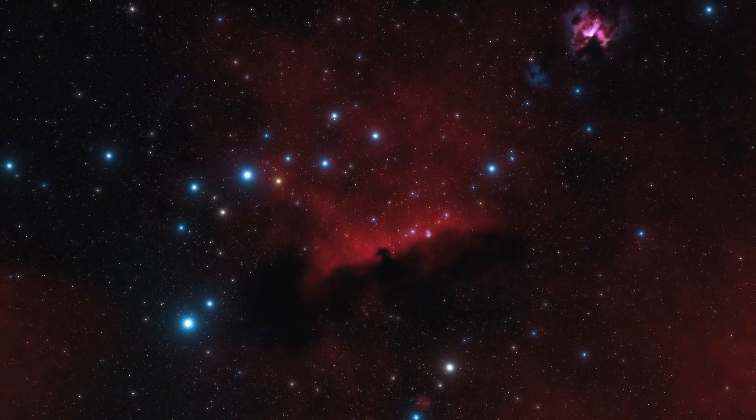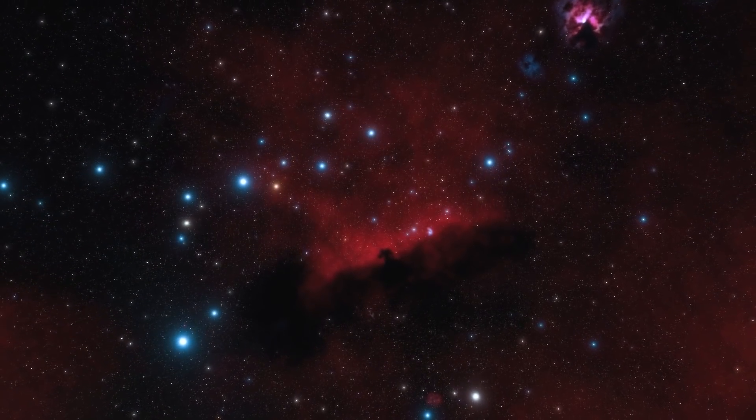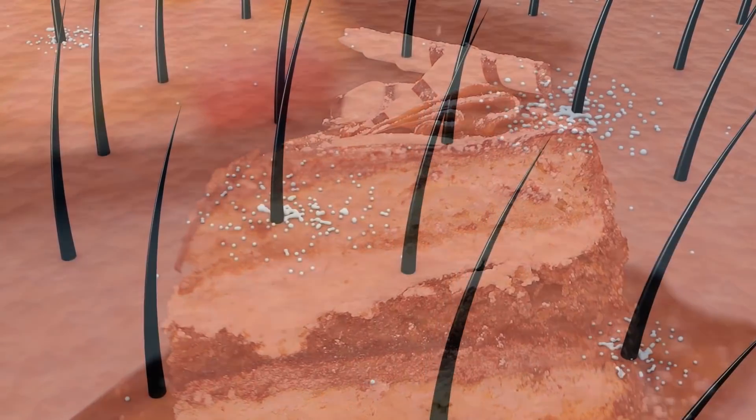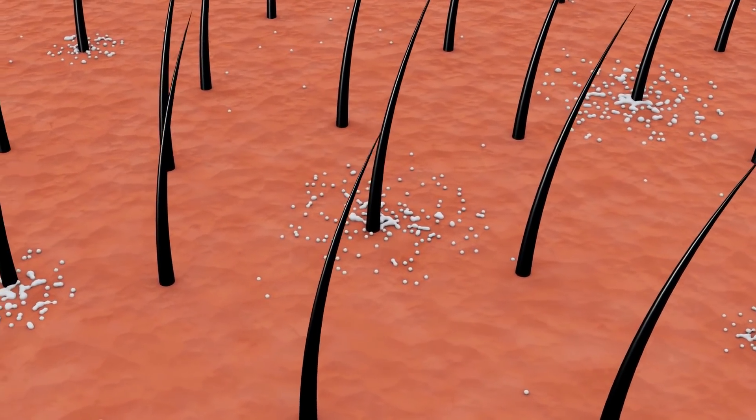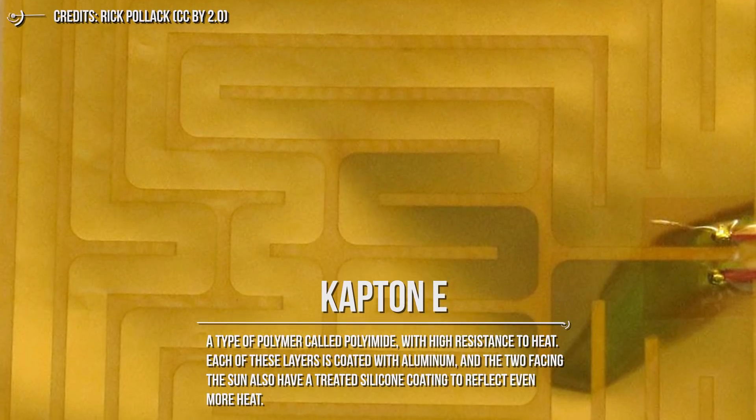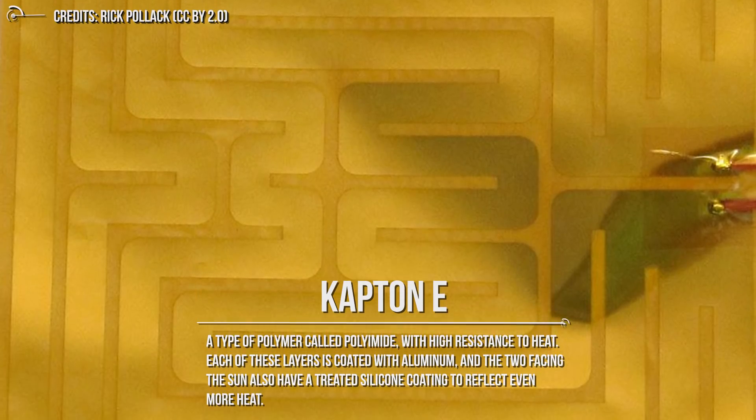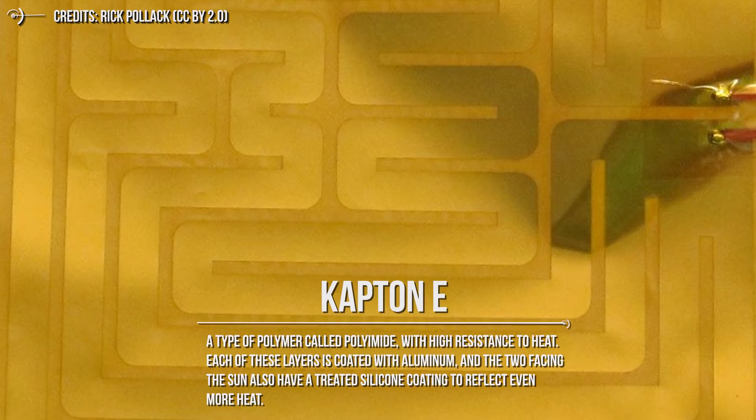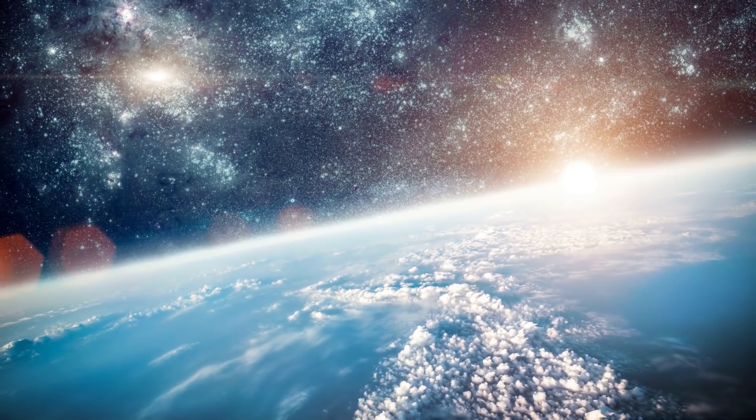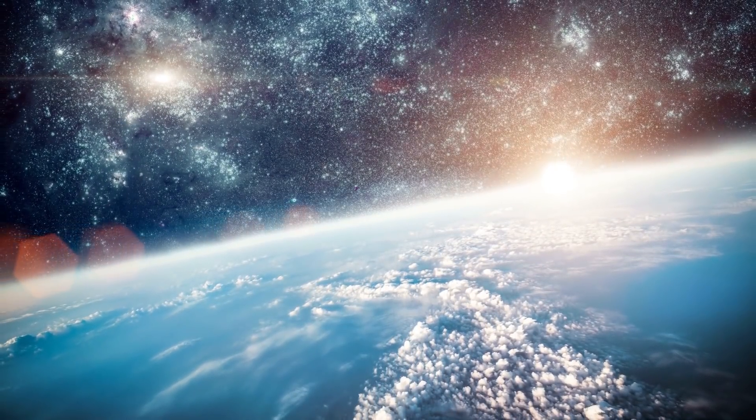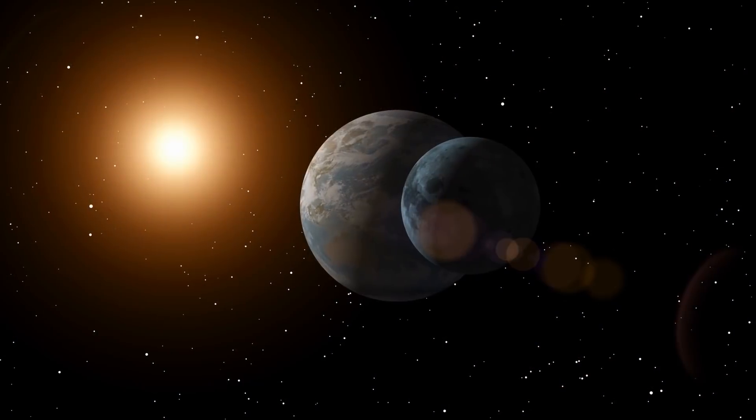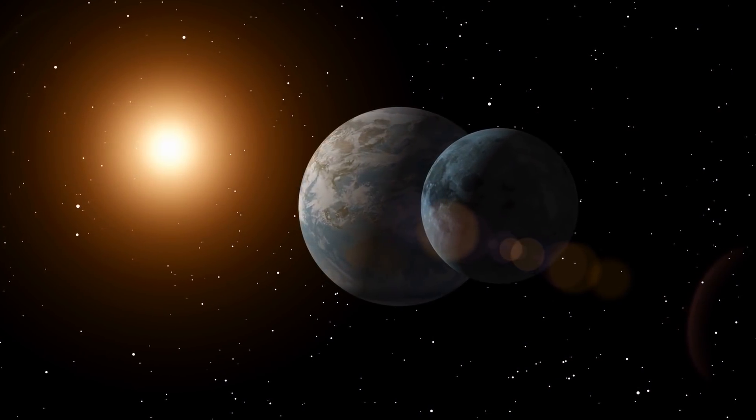Once in space, the telescope will deploy a solar screen as large as a tennis court. A structure with a bizarre shape, a kind of cake with five layers, each of which has the thickness of a hair and made of Kapton E, a type of polymer called polyimide with high resistance to heat. Each of these layers is coated with aluminum, and the two facing the Sun also have a treated silicone coating to reflect even more heat. Each layer is also vacuum-insulated and spaced out from the others. There is one problem, however. This sort of umbrella will obviously have to always stand between the heat sources and the mirror.